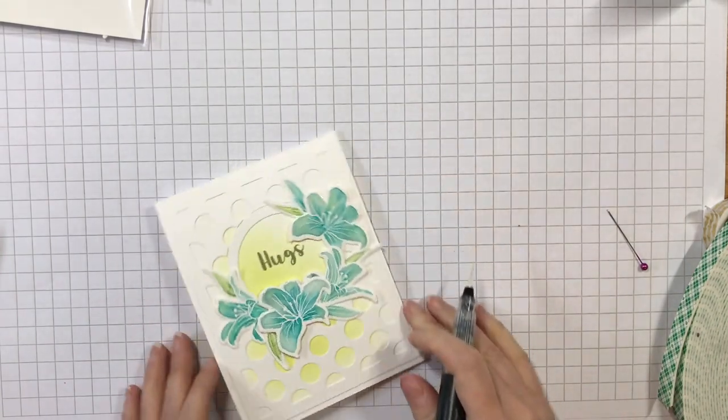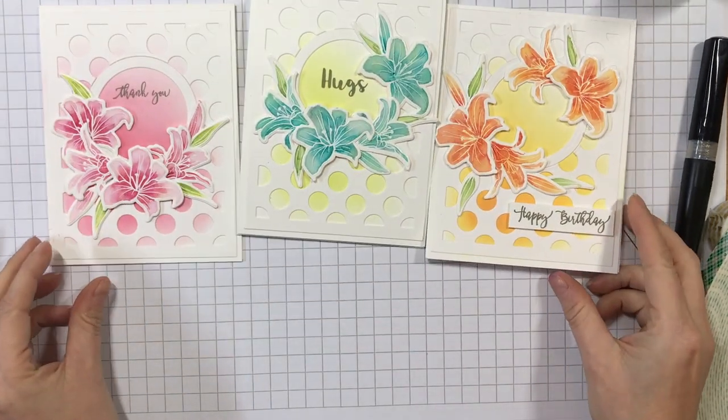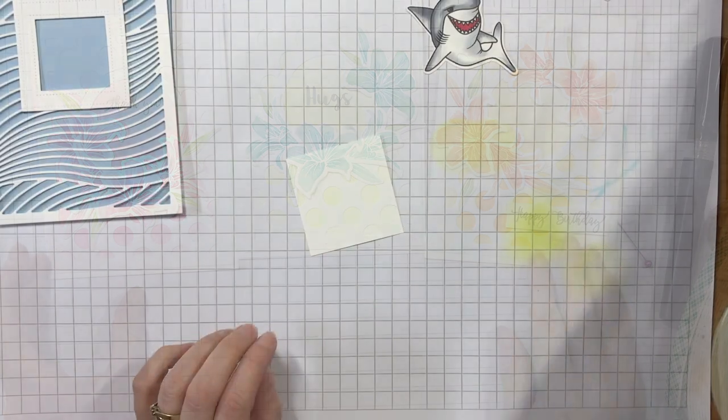I finished off the card with a few touches of sparkle using a Spectrum Noir shimmer pen. And here's the three cards all together just to compare the different looks and colors.